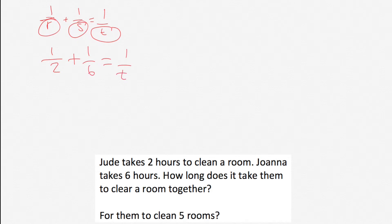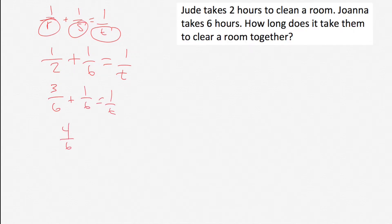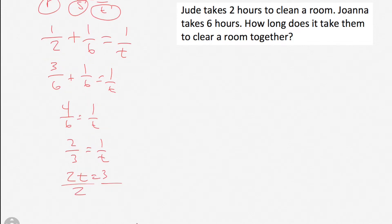There are a few ways to attack this. The way I do it is with a common denominator, which is, in this case, six. So one over two is just like three over six, plus one over six equals one over T. Then we have four over six equals one over T. Four over six can simplify to two-thirds equals one over T. And then we cross-multiply. We get two T equals three. Divide each side by two. T equals three-halves.